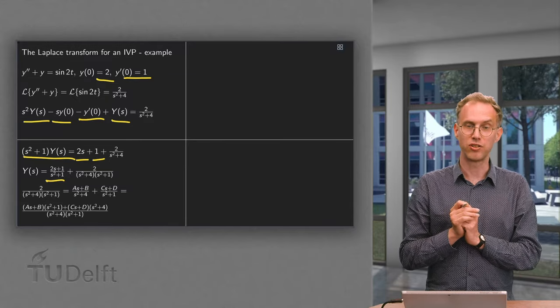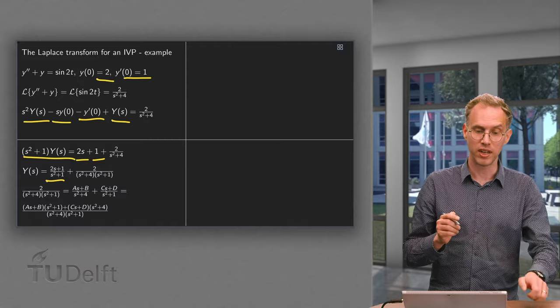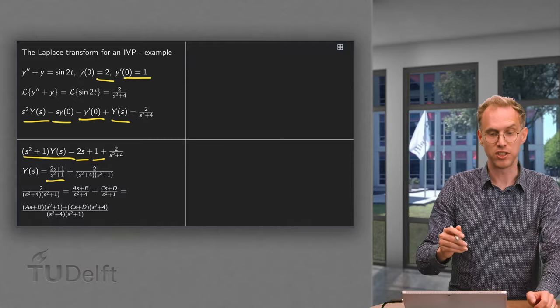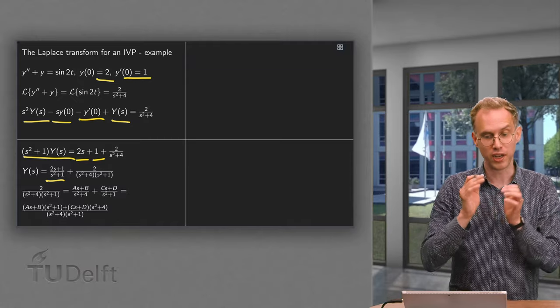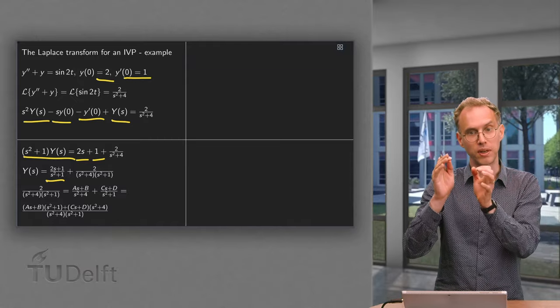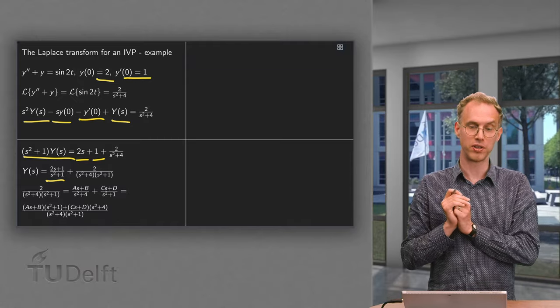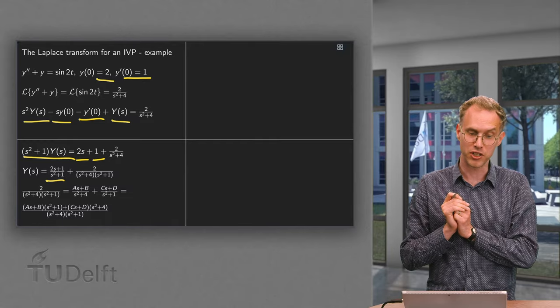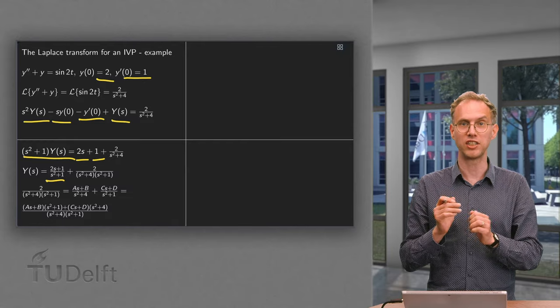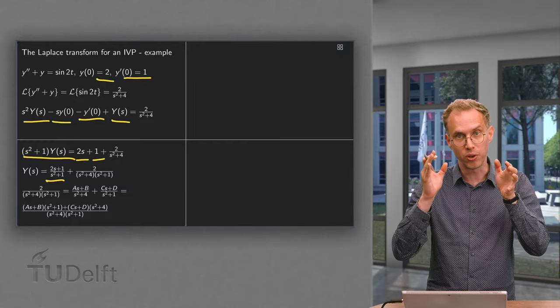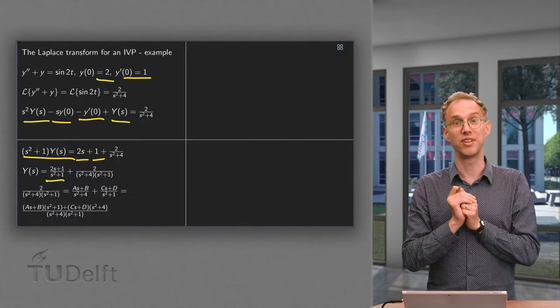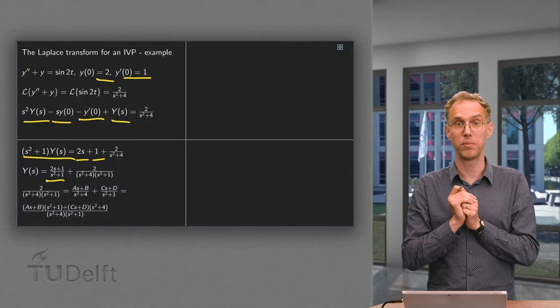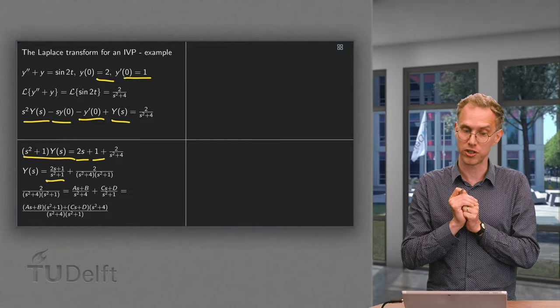The second term, though, is a mess. It's 2 over (s² + 4)(s² + 1), so we will have to separate the fraction. We will concentrate on the second term first.